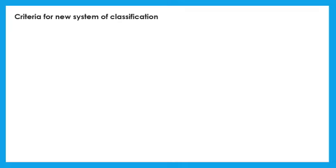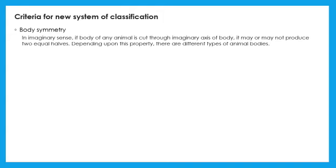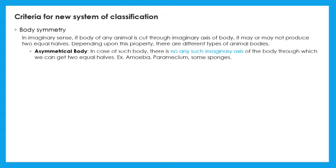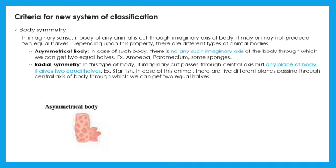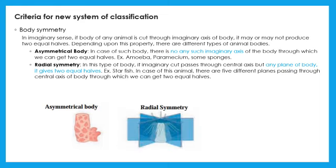The second criteria is body symmetry. The symmetry can be understood by taking an imaginary cut through the animal body. Based on symmetry, there can be three types. In asymmetric animals, there is no symmetry in any plane. For example, amoeba. The imaginary cut passing through central axis, but any plane of body gives more than one equal halves. These animals show radial symmetry. For example, starfish.